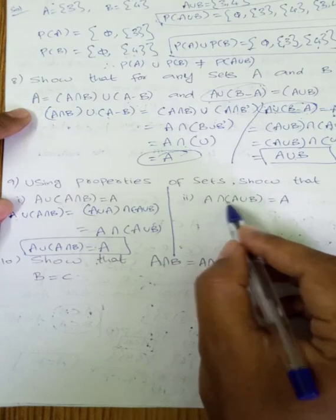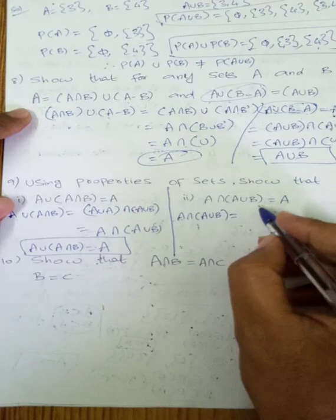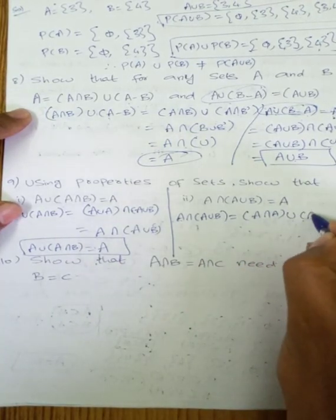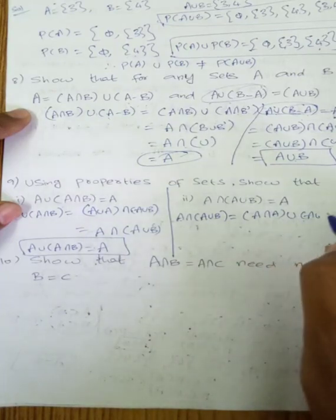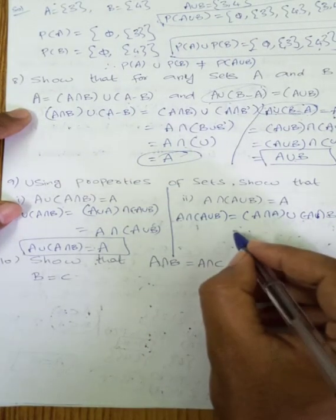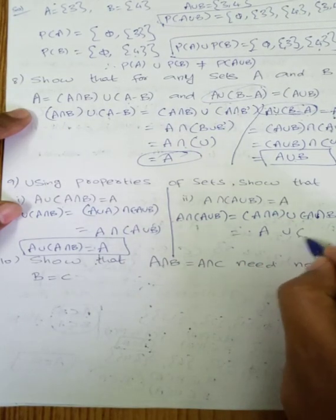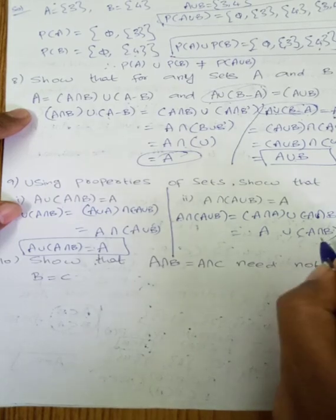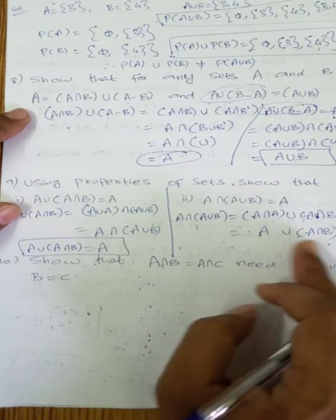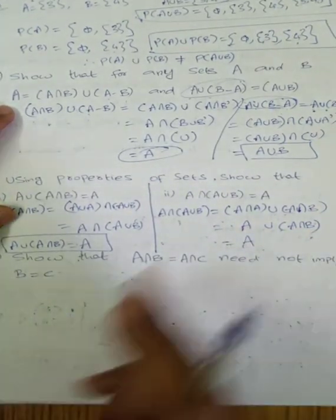A union (A intersection B) equals (A union A) intersection (A union B), which equals A intersection (A union B), which equals A. So A intersection (A union B) equals A, confirming A union (A intersection B) equals A.